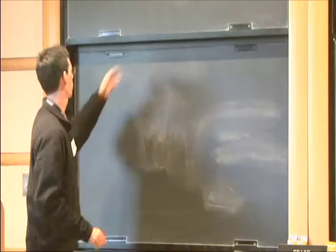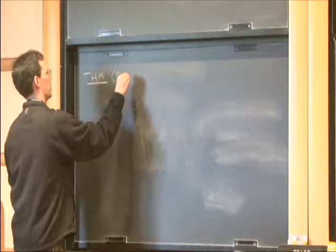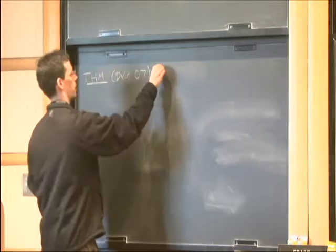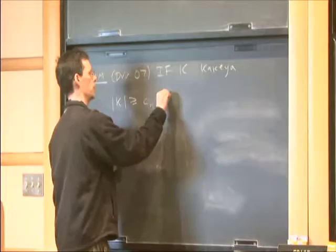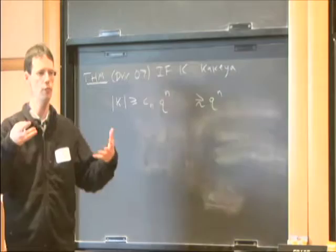The theorem about the size of Kakeya sets was proved by Dvir, I think in 2007. It says the following: if K is a Kakeya set, then the size of K is at least some constant that depends on the dimension N times Q to the N. So in other words, the Kakeya set needs to occupy some definite fraction of the entire vector space.